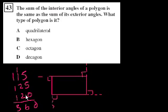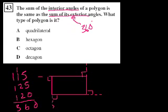So the sum of the exterior angles of any polygon is always 360 degrees. Since the sum of the interior angles must also equal 360 degrees, we're asking: what polygon has interior angles that add up to 360 degrees? That is a quadrilateral.